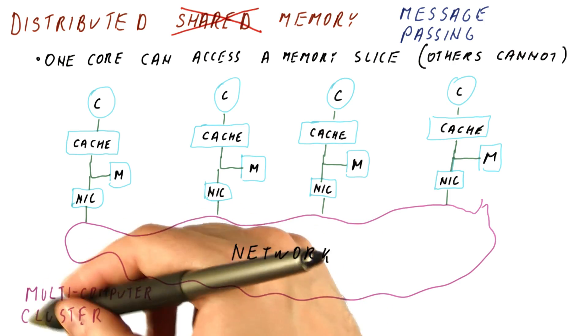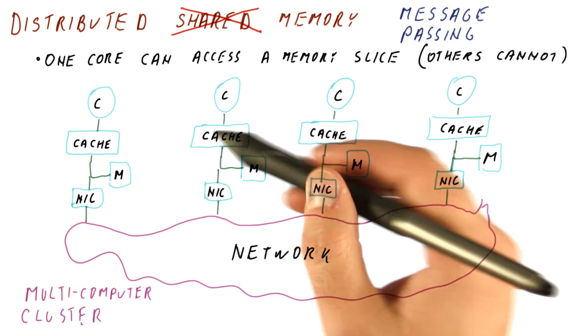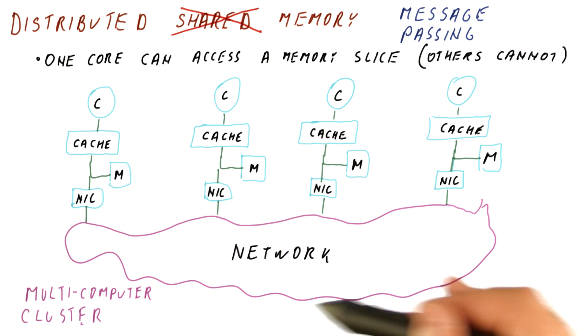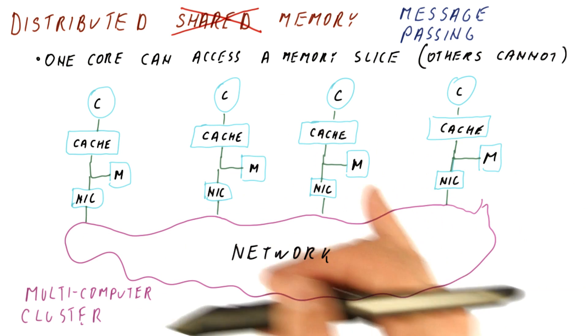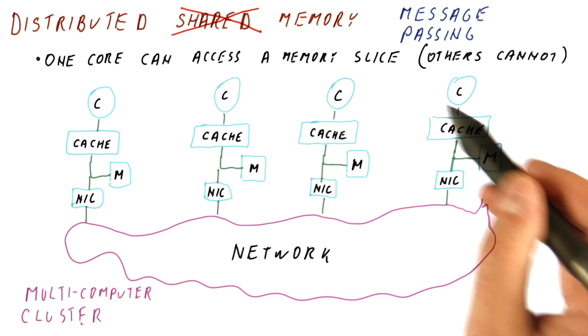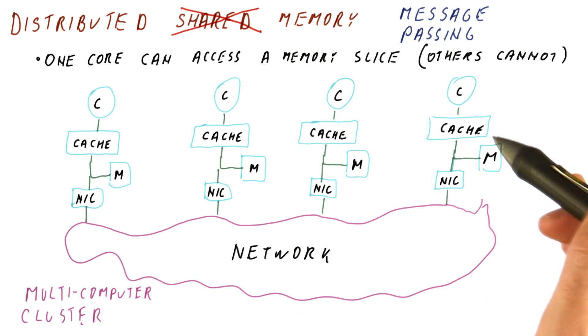These are also called cluster computers, because really, you put a bunch of normal computers together into a tightly networked cluster, and you get something like a distributed memory system. These types of computers tend to scale to a large number of processors.